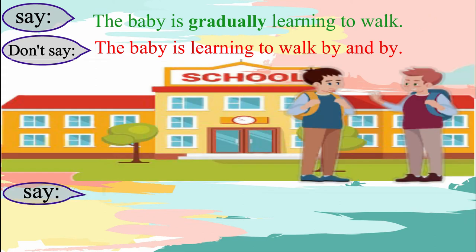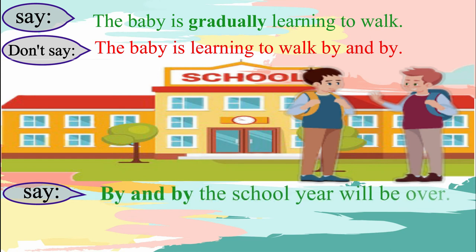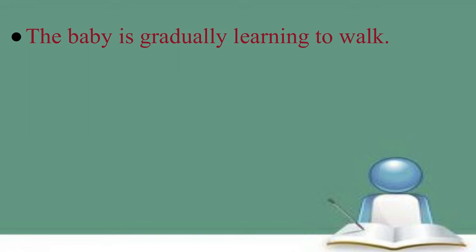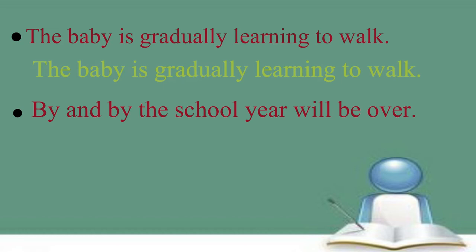The correct sentence is: the baby is gradually learning to walk. Have a look at another example. We say: by and by, the school year will be over. We don't say: gradually, the school year will be over. Please speak the correct sentences after me. The baby is gradually learning to walk. By and by, the school year will be over.